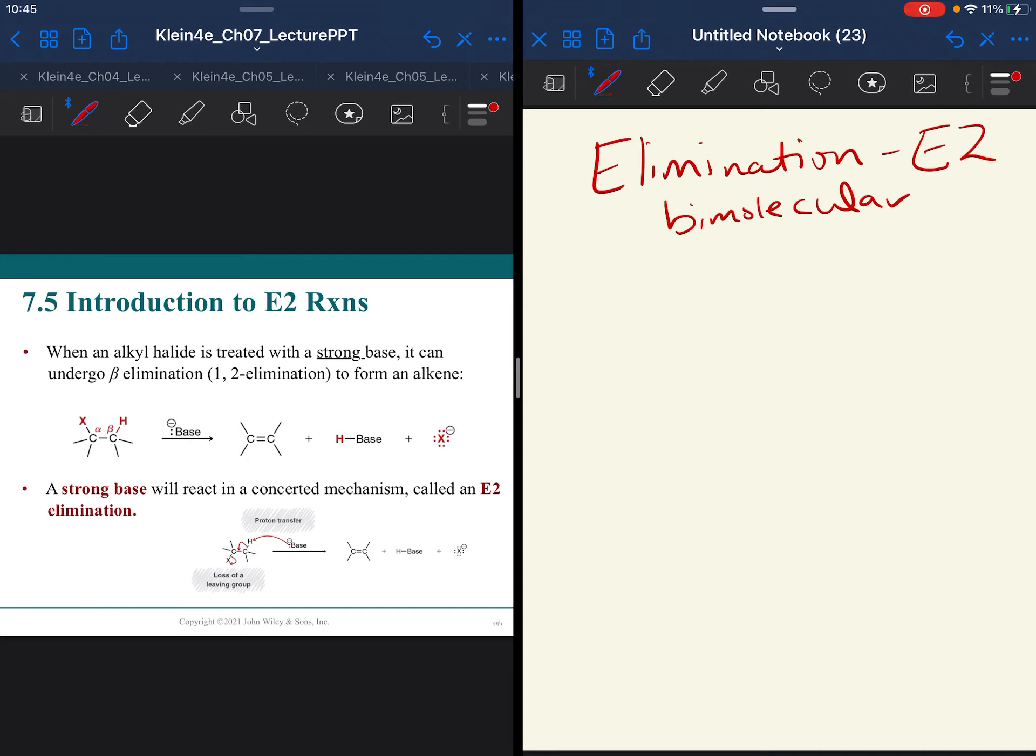That's based on the kinetics. Let's talk about generally what this mechanism looks like. You have to have a halogen, that's your leaving group, and you have to have a hydrogen on a carbon beta to that halogen.